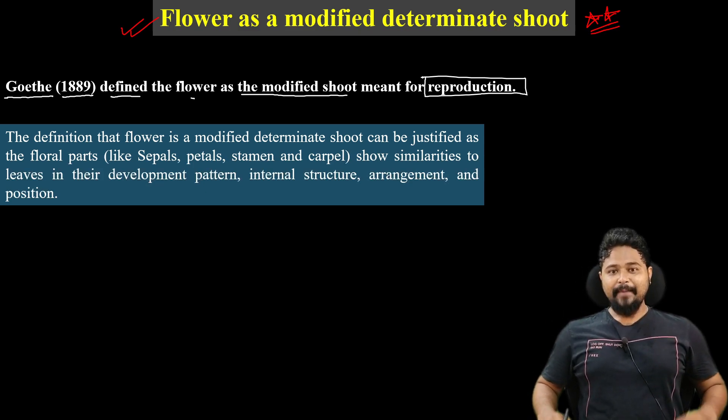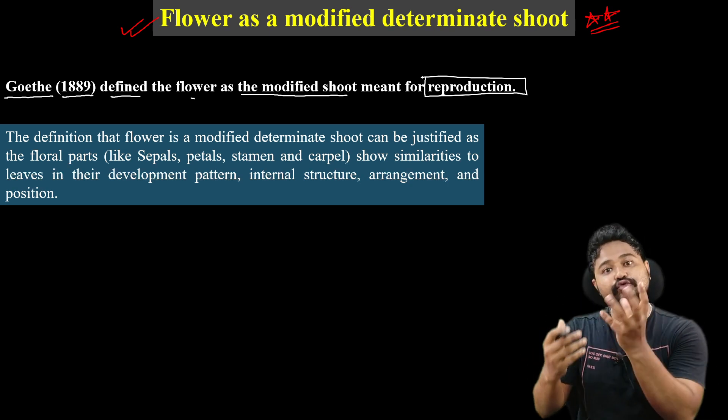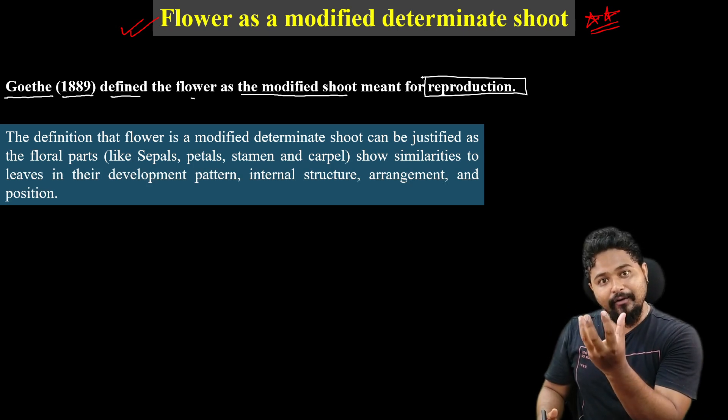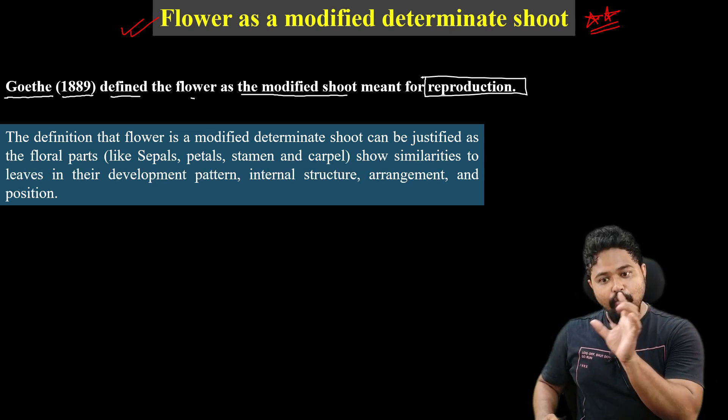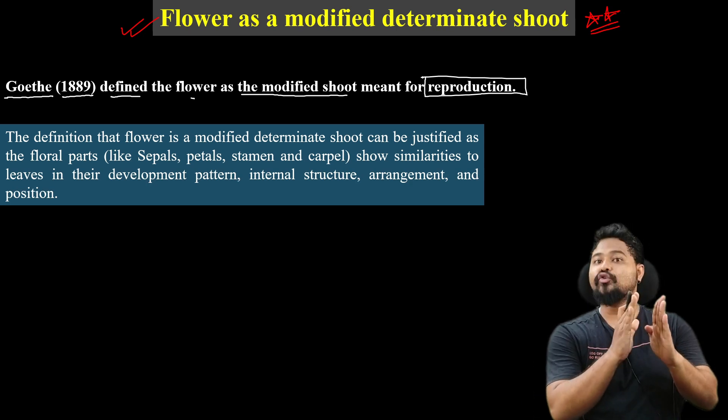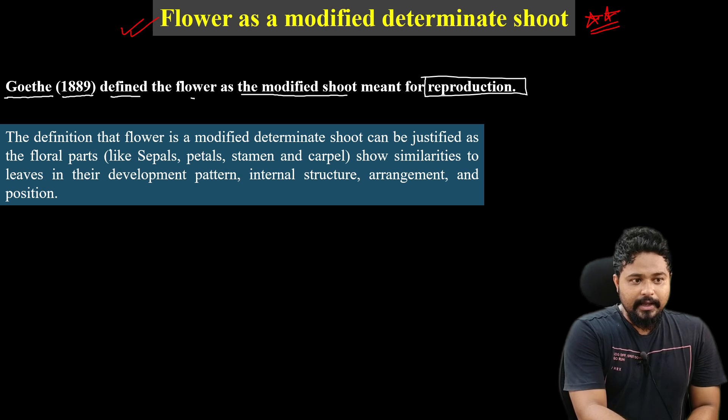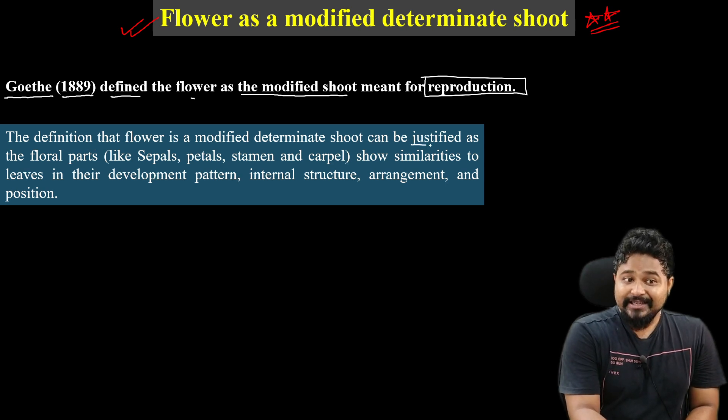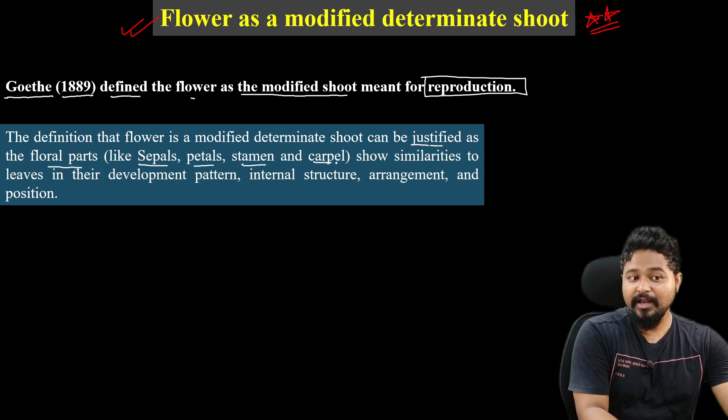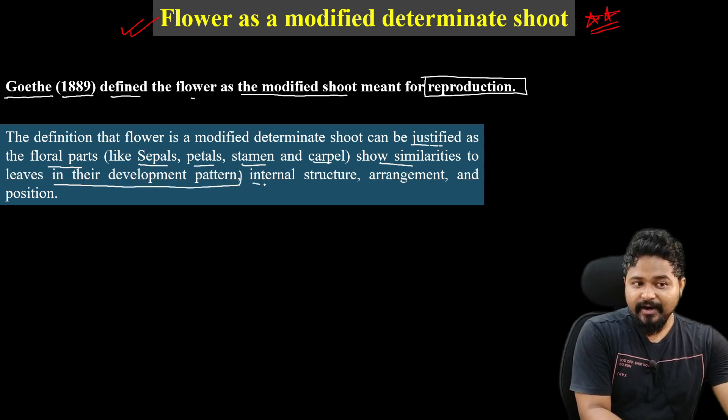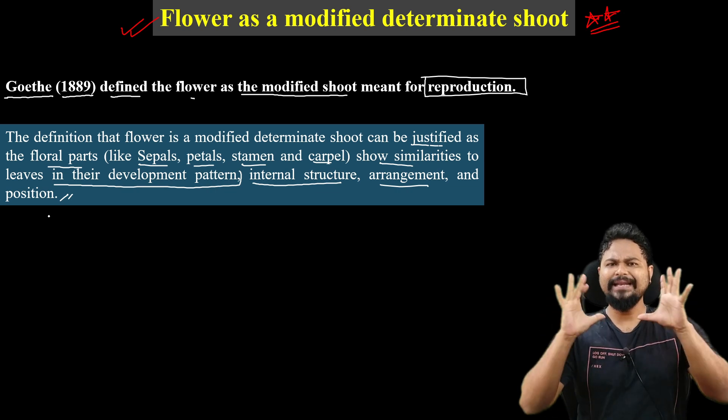What is it? This is the stem. The stem is modified into a flower, and this is the modified shoot. The definition that flower is a modified determinate shoot can be justified as the floral parts - what are the parts? Sepals, petals, stamen and carpels - show similarities to leaves in their developmental pattern, internal structure, arrangement, and position.